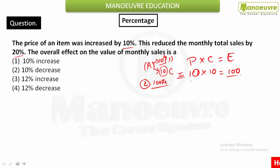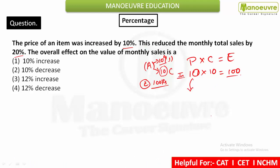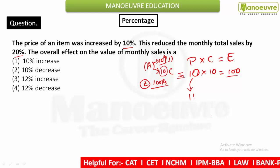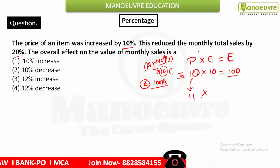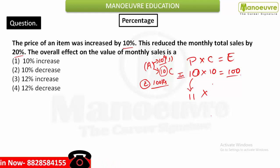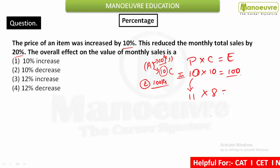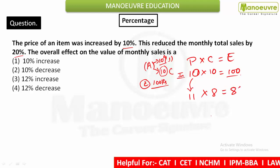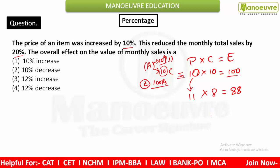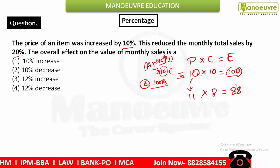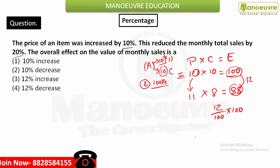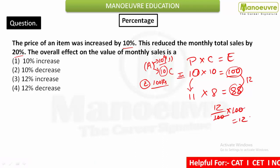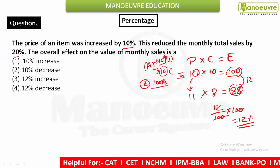Price increases by 10%: 10% of 10 is 1, so price becomes 11. Now because of the price increase, the sale reduces by 20%. 20% of 10 is 2, so consumption becomes 8. The new expenditure is 11 × 8 = 88. The original was 100, now it's 88 — a decrease of 12. To express as percentage: 12/100 × 100 = 12% decrease.